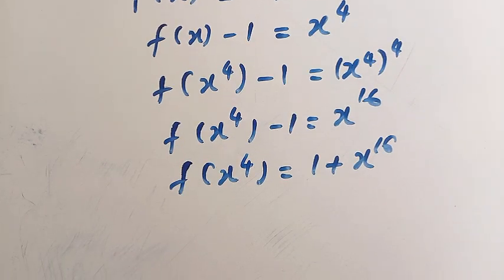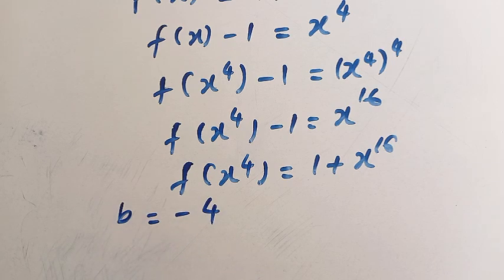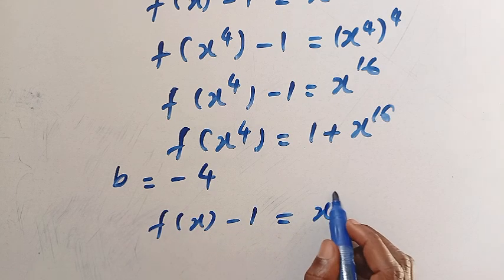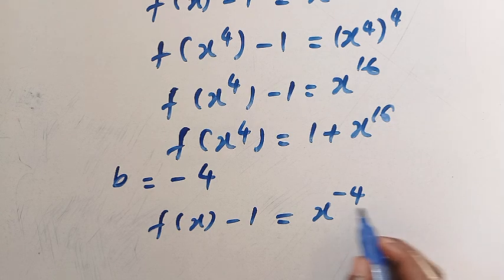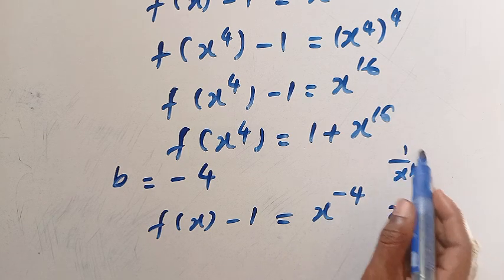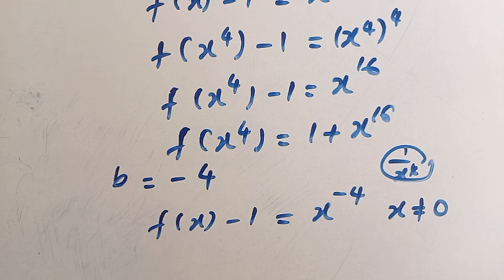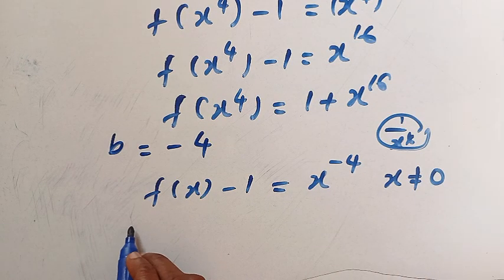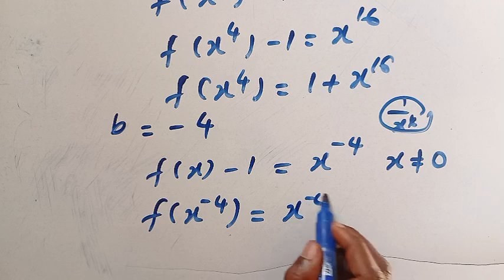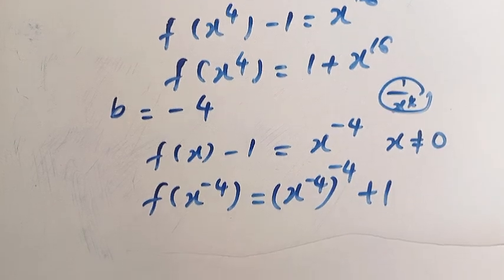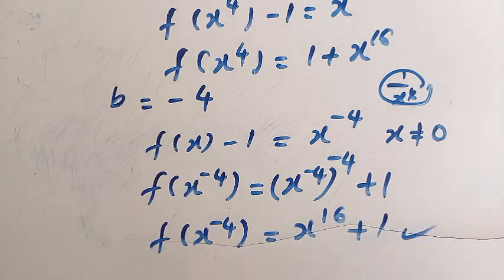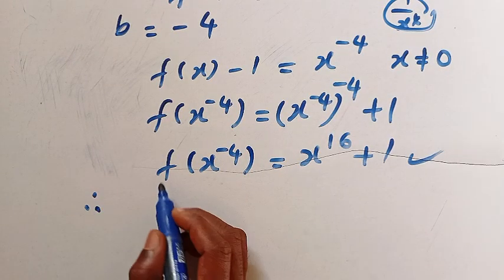Again, if b equals minus 4, we have f of x minus 1 equals x raised to the power of minus 4. This is 1 over x raised to the power of 4, so x must not equal 0, otherwise we have an undefined result. Changing this to x raised to the power of minus 4, we have f of x raised to the power of minus 4 equals x raised to the power of minus 4, raised to the power of minus 4, plus 1. This gives f of x to the power of minus 4 equals x to the power of 16 plus 1. This is also true.